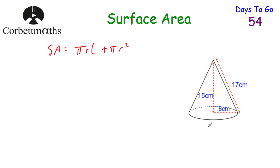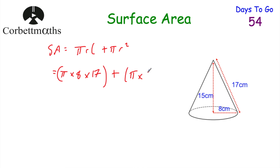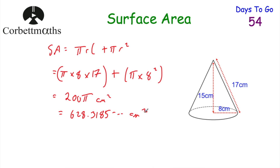So we take pi, multiply by the radius of the base which is 8, then multiply by the slant height which is 17 — that gives us the curved surface area. Then we add the area of the base: pi multiplied by 8 squared. Working that out gives us 200 pi centimetres squared, or as a decimal 628.3185 centimetres squared. So the total surface area of this cone is 628.3185 centimetres squared.